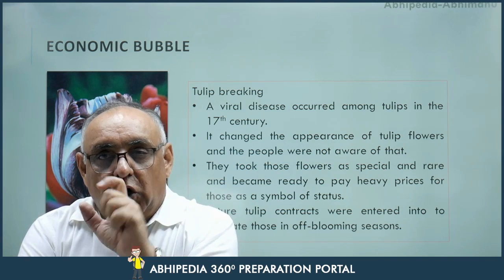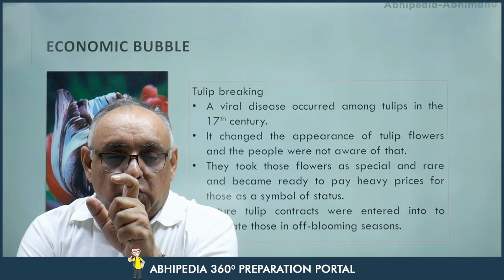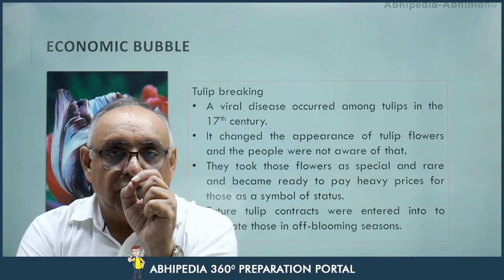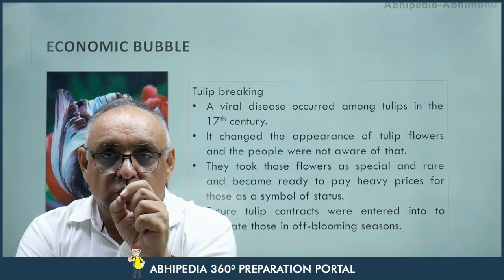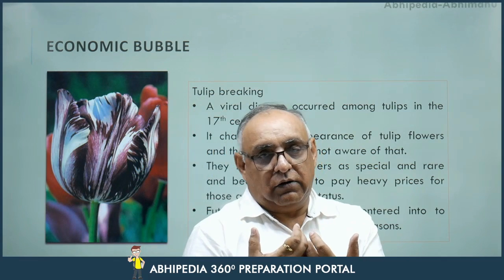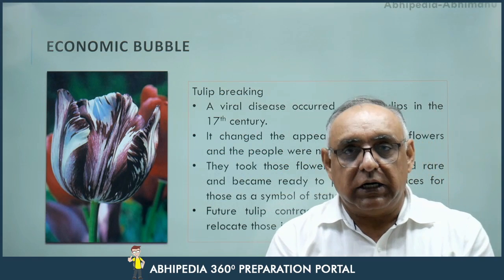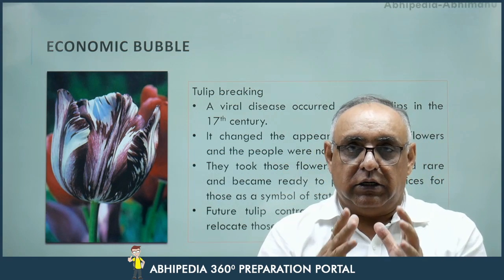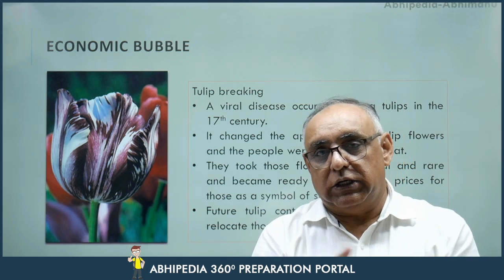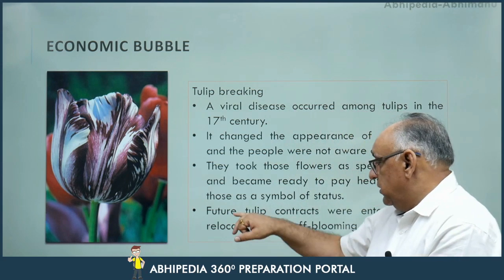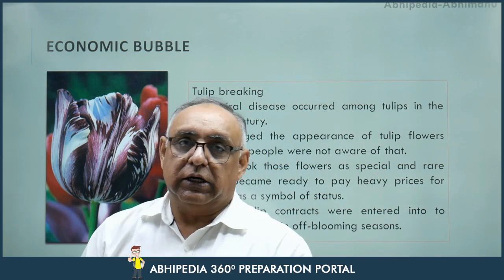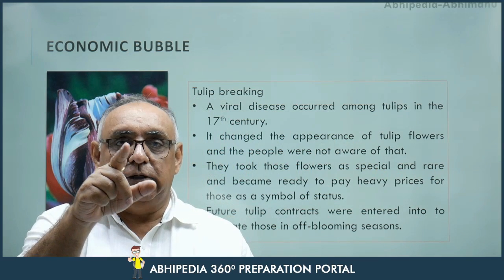But the people of that society were not aware that the change in the appearance of the tulip flowers was due to a disease. Instead, they thought that these flowers whose appearance had changed were special and rare flowers. That is why they became ready to pay very heavy prices for them as a symbol of status. Because tulip flowers seemed quite rare and important to people, and since during the blooming season you cannot relocate a tulip plant, future contracts for tulips began to form. People started purchasing tulip plants on which these changed-appearance flowers grew.